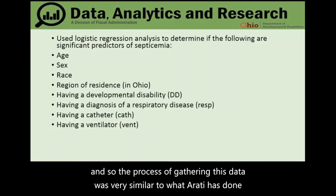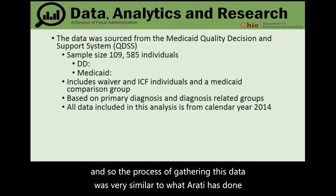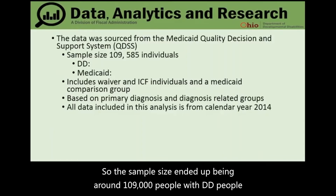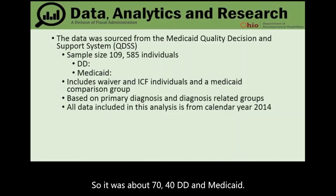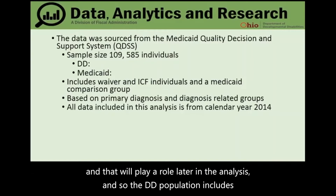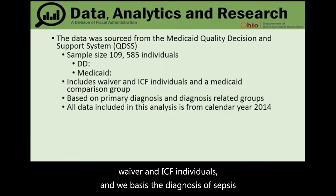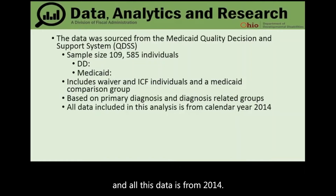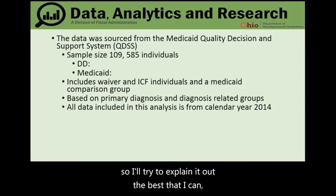Region was originally one variable but got split into five separate binary variables. The sample size ended up being around 109,000 people — roughly 70% DD and 40% Medicaid. Random sampling was used to identify the 40,000 Medicaid sample. The DD population includes waiver and ICF individuals, and sepsis diagnosis was based on primary diagnosis and diagnosis-related groups in Medicaid. All data is from 2014.